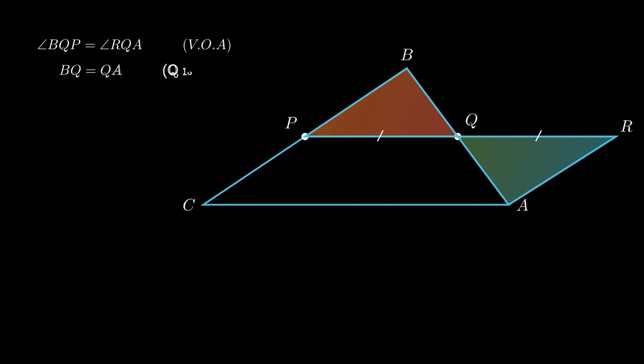Segment BQ is equal to segment QA as Q is the midpoint of side AB. Segment PQ is equal to segment QR by the construction. Using SAS rule, triangle PBQ is congruent to triangle AQR.